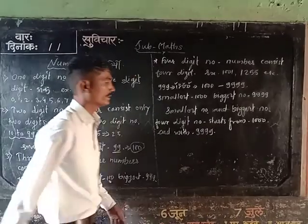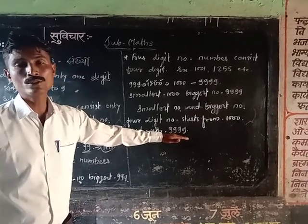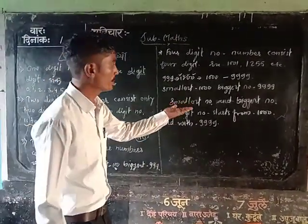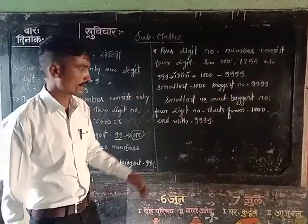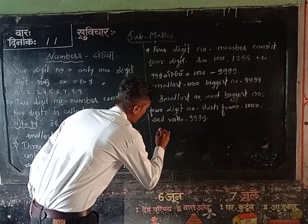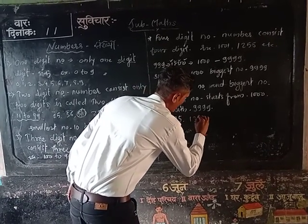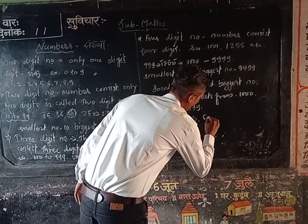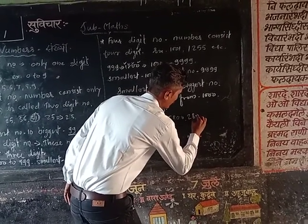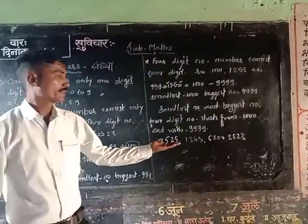So in 9,999, why is it the biggest number? Now we are given 4 numbers. We have: 2,525; 1,343; 6,800; and 2,823. So these are the 4 numbers we are working with.